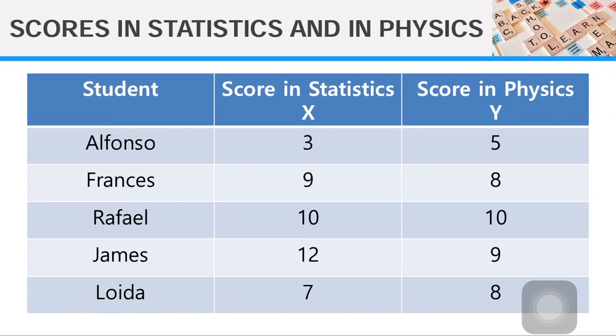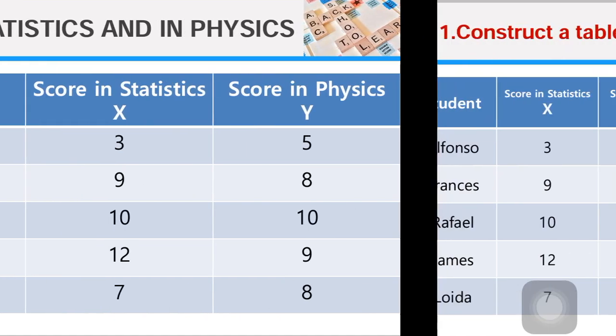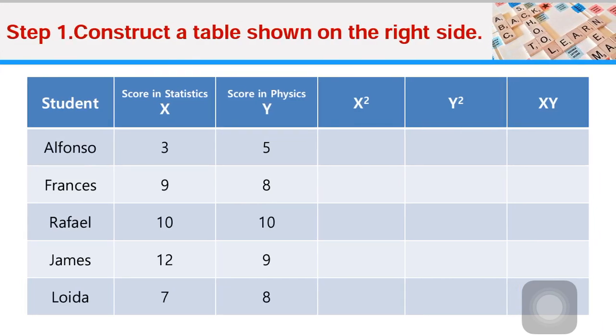Let's have these eight steps. Step number one: Construct a table as shown below. For example, you only have three columns. We make it six. We add a column for X squared, Y squared, and XY.